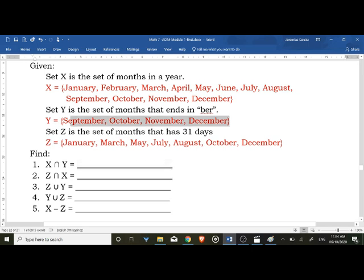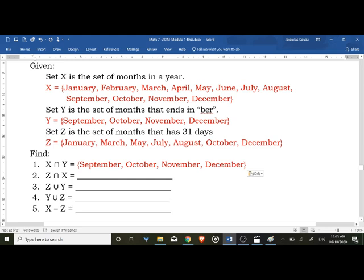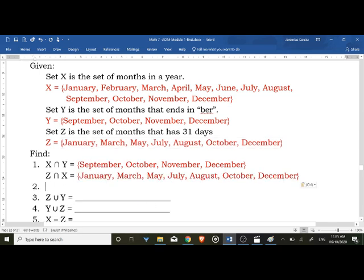Okay, so X intersection Y. Intersection, that means the common of your X and Y. So ano yung common ng X and Y? Si Y. So sulat na lang si Y, kasi lahat ng Y nandun kay X, 12 months in a year. What about Z tsaka si X? Sino ang common? So si Z, kasi si Z subset ni X.